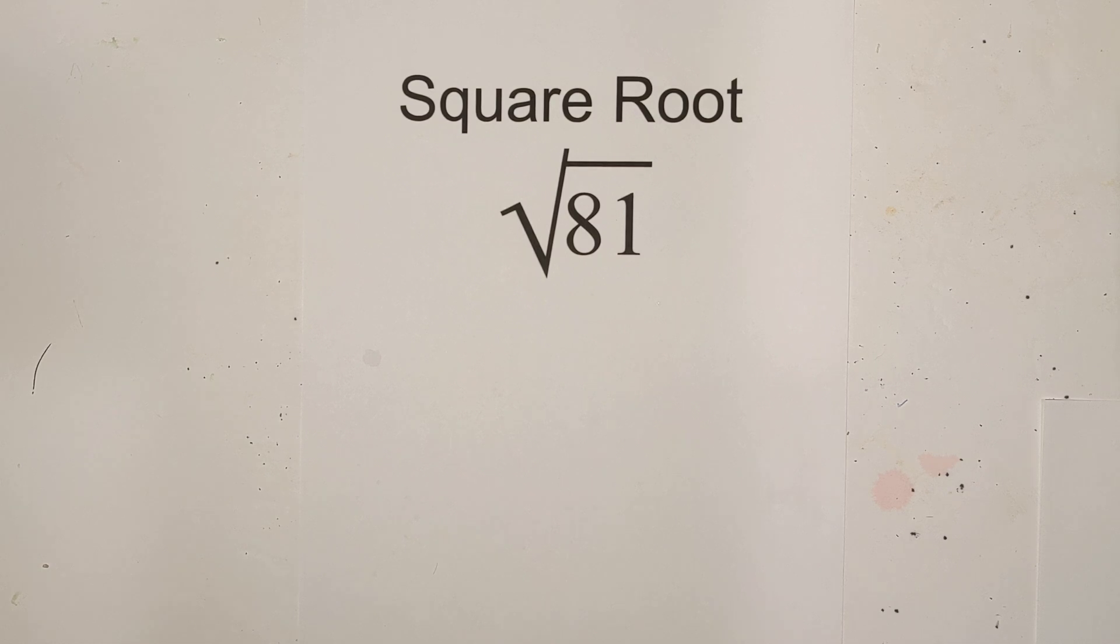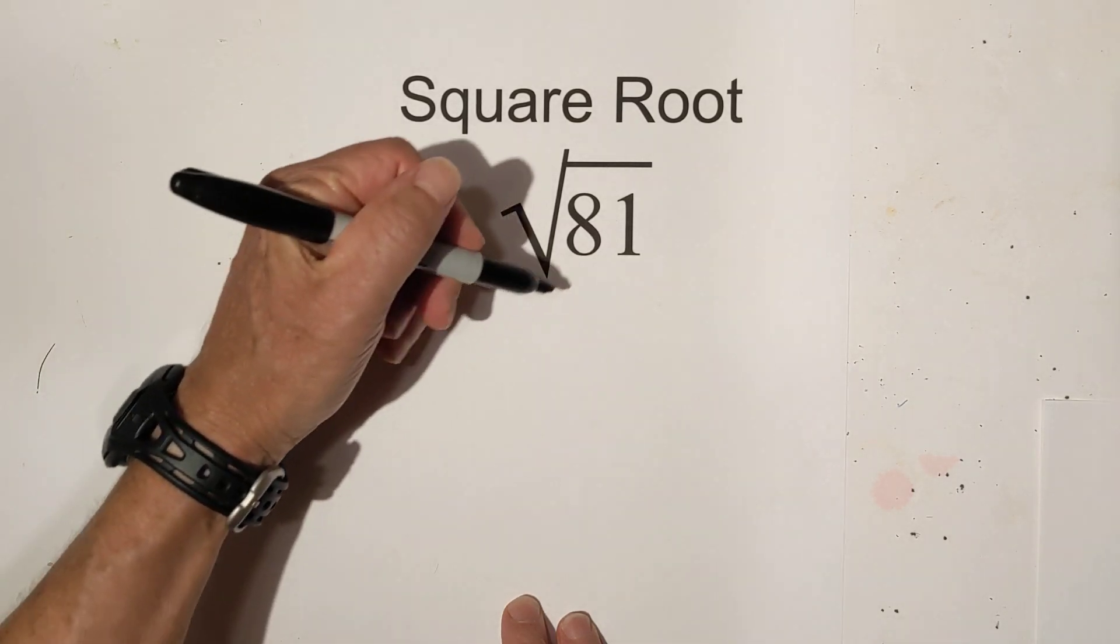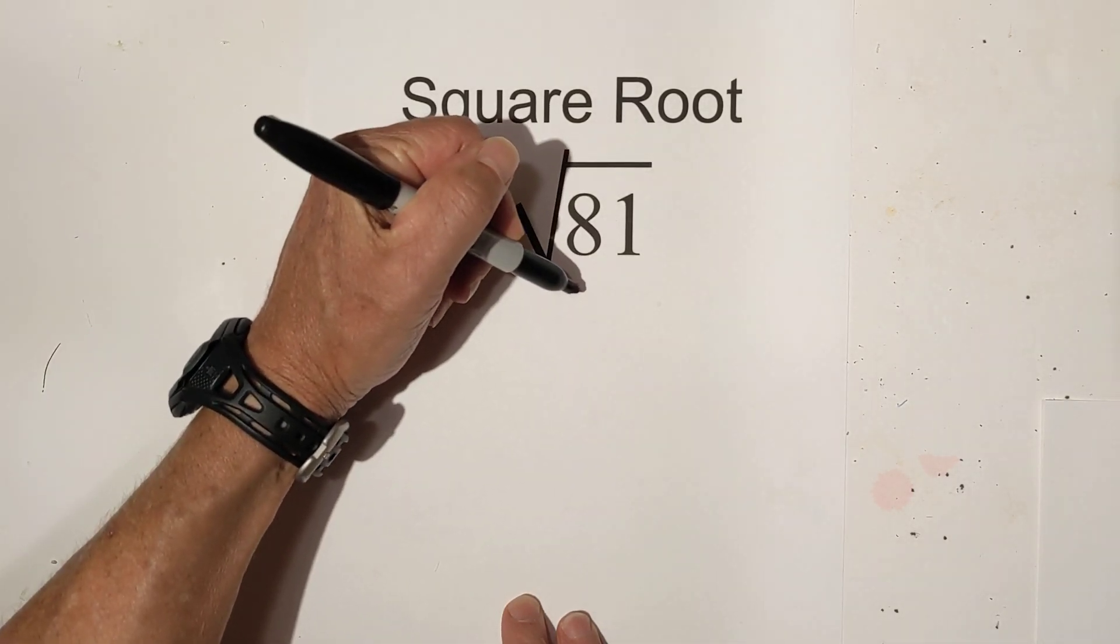Welcome to Moo Moo Math and Science. In this video, let's find the square root of 81 using a factor tree. So let's first do a factor tree for 81.